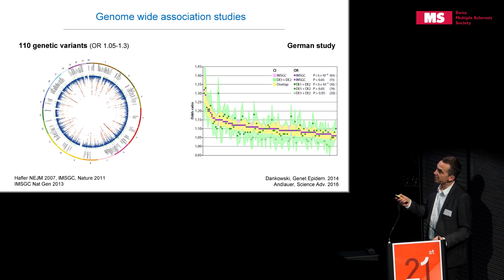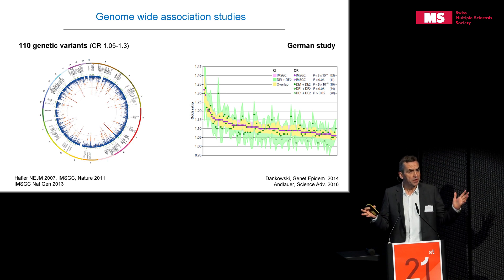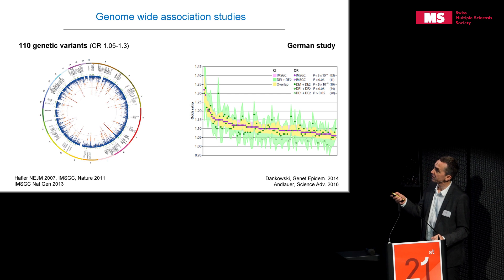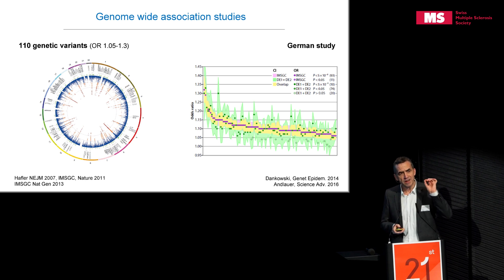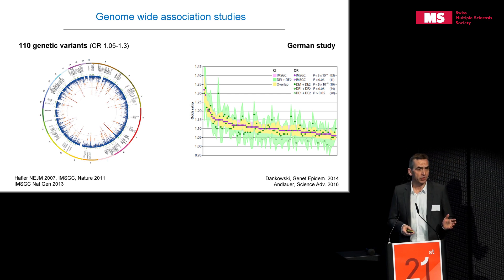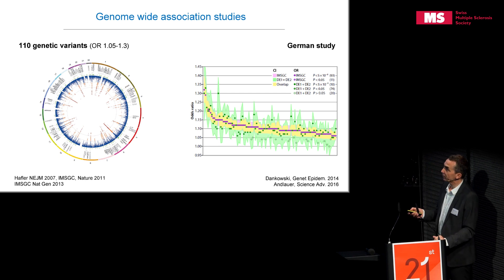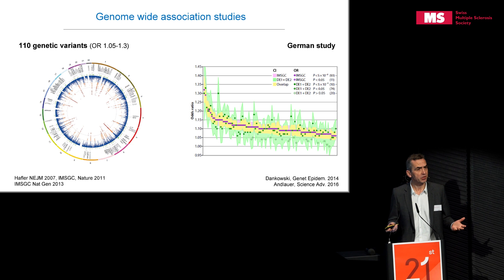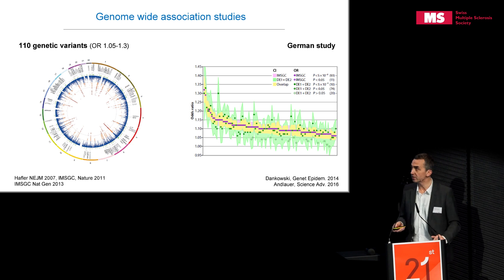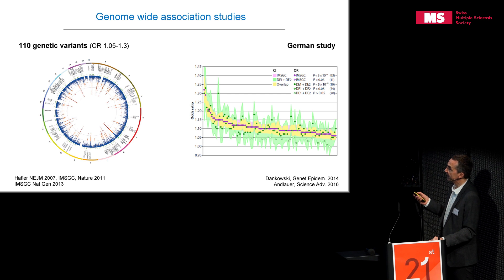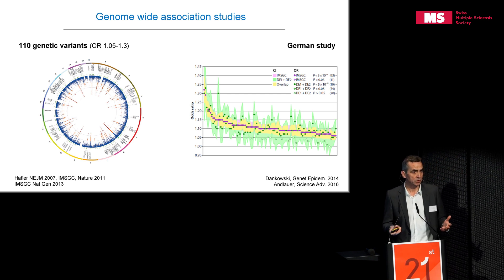Compared to the HLA alleles, which increase risk by threefold, these 110 variants each increase risk by 1.3 to 1.5-fold — each adding a small contribution to MS risk. A follow-up study in Germany with almost 15,000 samples — 5,000 patients and 10,000 controls — confirmed that the same genes play a role in German patients. Of the 110 variants, 82 were replicated in the German cohort, and a number of new genes were added to the repertoire.